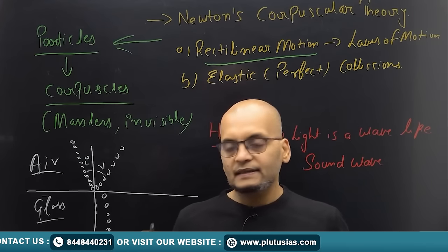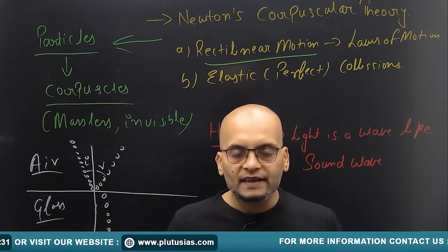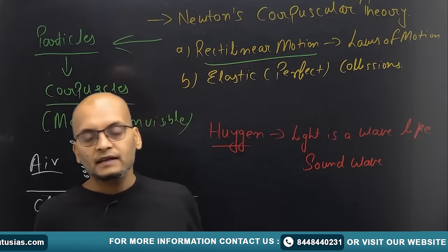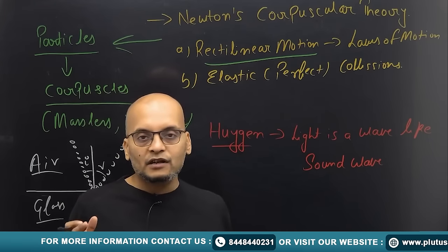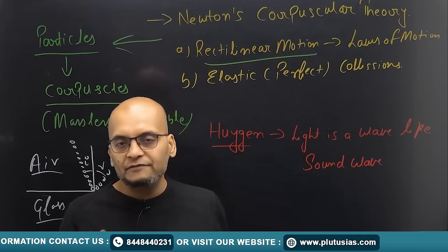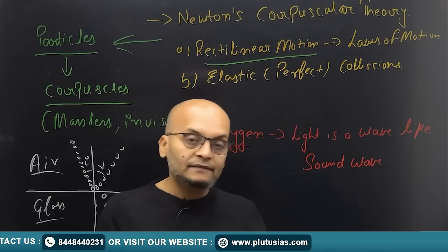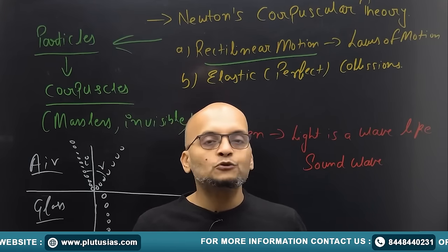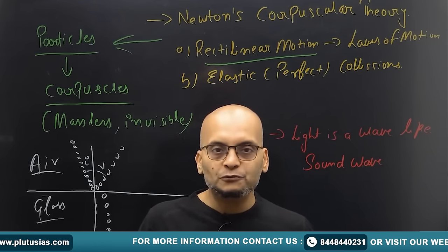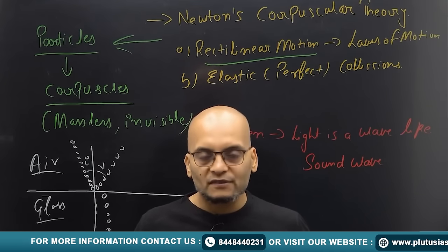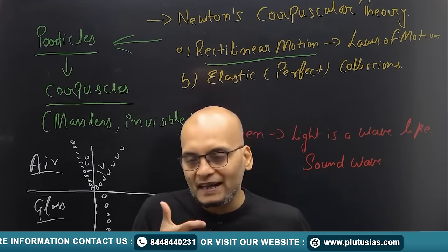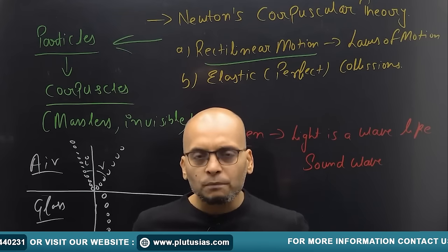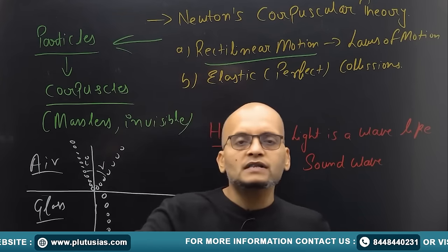Christiaan Huygens was the first individual who suggested that light is a wave. He said that light travels in the same way as sound waves travel. He gave this theory at the same time as Newton, but due to the popularity of Newton, Huygens' theory was rejected and people did not accept it wholeheartedly.